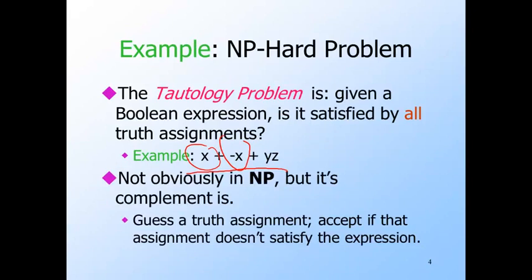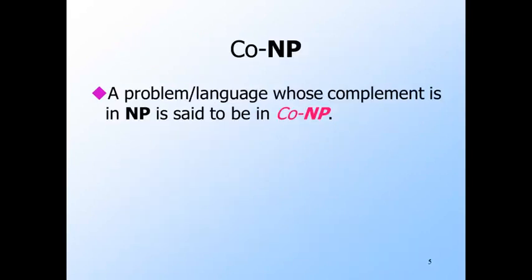On the other hand, the complement — the non-tautologies, including those inputs that don't make sense as Boolean expressions — is in NP. We use the non-determinism to get the truth assignment, and evaluate the expression in polynomial time for this truth assignment. If the value is false, then the non-deterministic machine accepts its input. The class of languages called co-NP is those languages whose complement is in NP. For example, the tautology problem is in co-NP, because the non-tautologies are in NP.